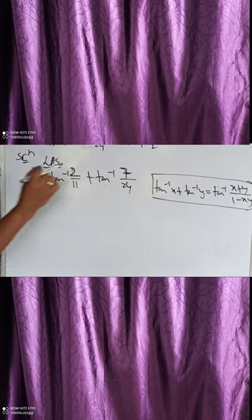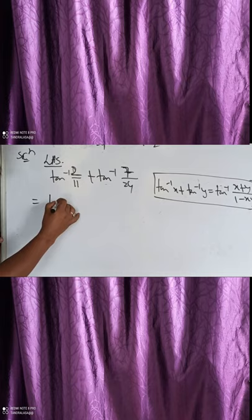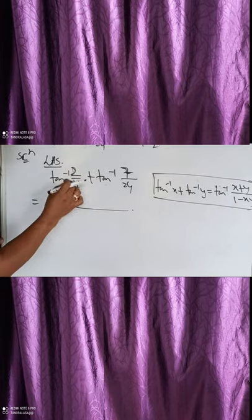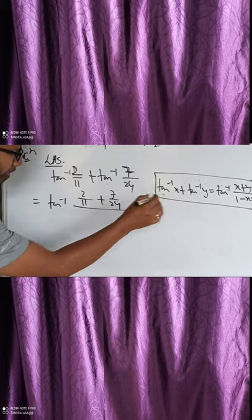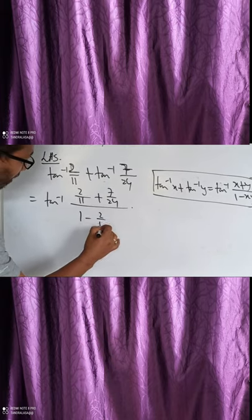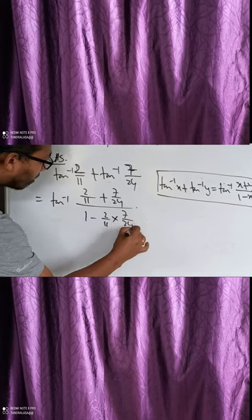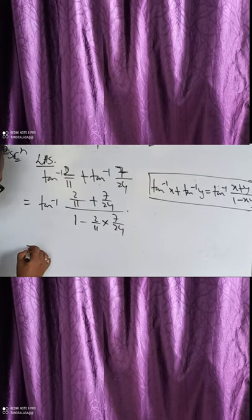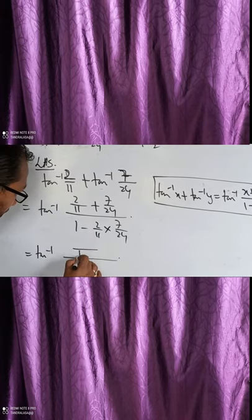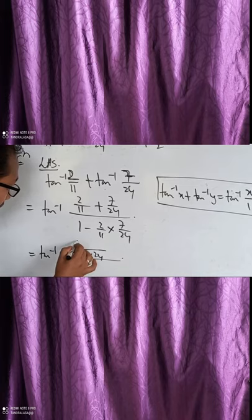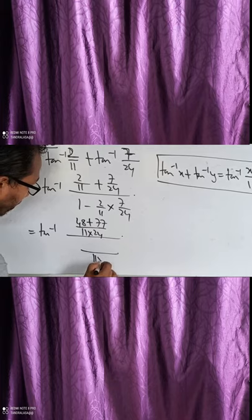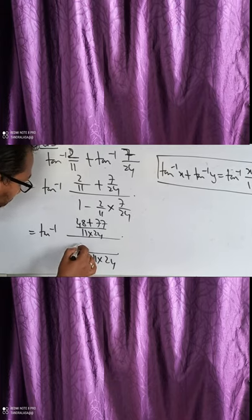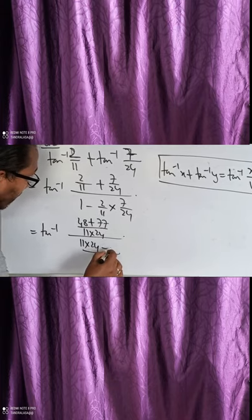We consider x as 2/11 and y as 7/24. So tan⁻¹(x) plus tan⁻¹(y): we write x plus y, that is 2/11 plus 7/24. Then 1 minus xy, which is 1 minus (2/11 into 7/24). Taking LCM as 11 into 24, the numerator becomes 48 plus 77 and the denominator becomes 11 into 24 minus 14.